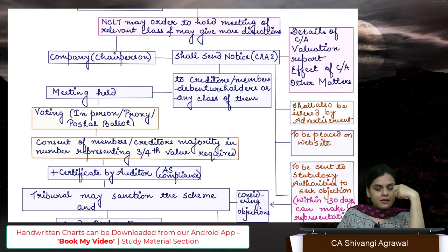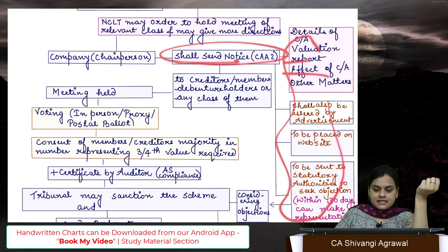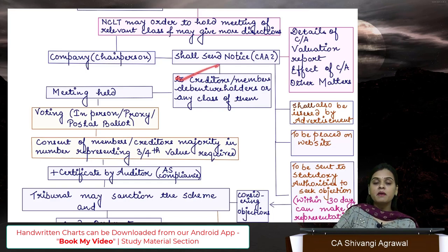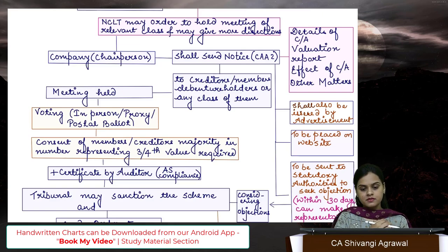This notice is also advertised in an English newspaper, vernacular newspaper, and placed on the website. If it is a listed company, it is also sent to stock exchange and SEBI. After sending this notice and advertising it with all details to creditors and members, the meeting is held. In the meeting, the creditors and members will vote and give their approval.